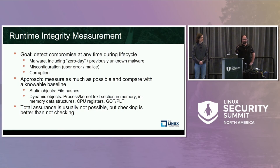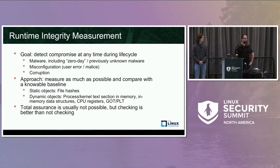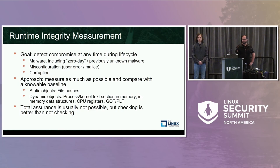The approach of MOT and runtime integrity measurement generally is to take a measurement of a running system and compare it against a knowable baseline of what the system should look like. For static objects, that might be a hash of a file. But we also support measurement of more dynamic objects — for instance, the text section of a kernel or a process, which might be self-modifying. The kernel self-modifies its code, so it is a dynamic data item. But also in-memory data structures, such as those used in the kernel — if those become corrupted, that can change the behavior of the kernel.